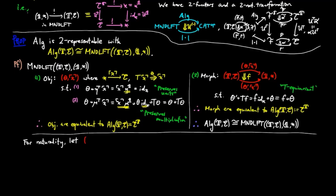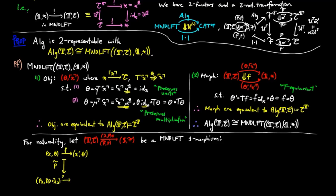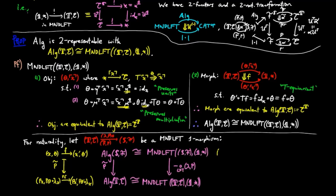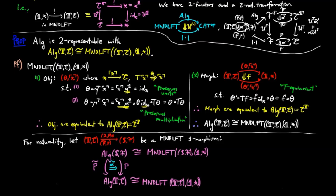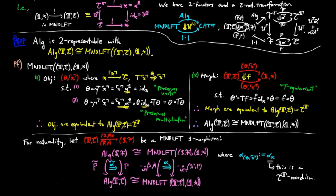Next, to show naturality, let lambda P, which is equivalent to (P, tilde P), be a monad lift 1-morphism. Recall tilde P takes an object (X, theta) in the Eilenberg-Moore category for S to PX with action P theta composed with lambda_X, and a morphism F to PF. The pre-composition functor by definition takes an object (theta, X) to (P theta composed with lambda_X, PX), and a morphism F to PF. Therefore this isomorphism is 1-natural. For 2-naturality, it is easy to see that the pre-composition of the monad lift transformation alpha has components equivalent to alpha_X, which is T-equivariant. Thus the isomorphisms are natural with respect to 2-morphisms. Therefore the 2-functor algebra is isomorphic to the 2-representable pre-sheaf on the initial object, which completes the proof.